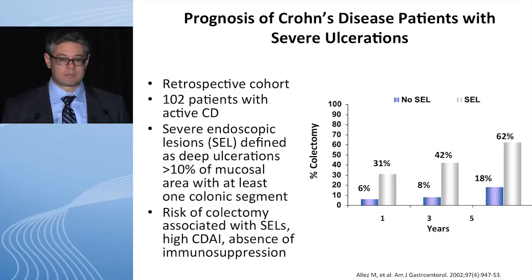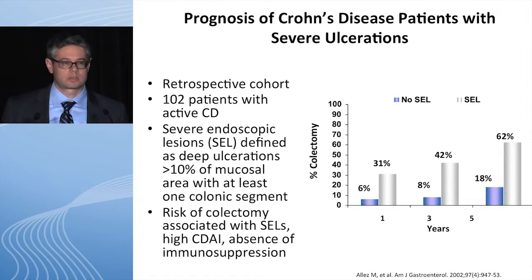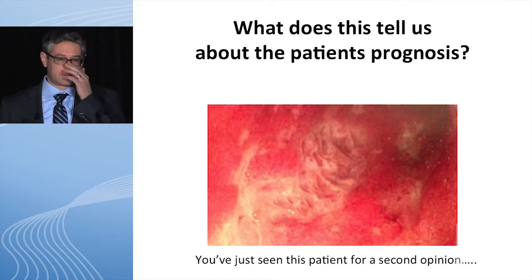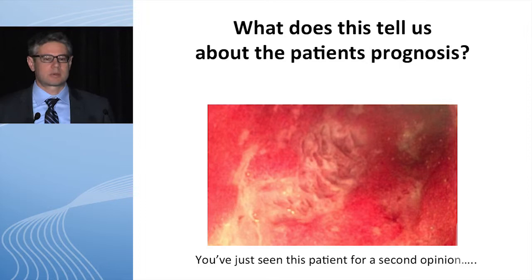There's also data going back more than 10 years telling us the importance of mucosal healing — not only that, but the relevance of not finding mucosal healing. This is one study showing the risk of progression to surgery in patients with Crohn's disease who did not have a healed mucosa. To give a practical example: when you've got active inflammation in Crohn's disease with deep ulcers, that lends to a risk of colectomy.